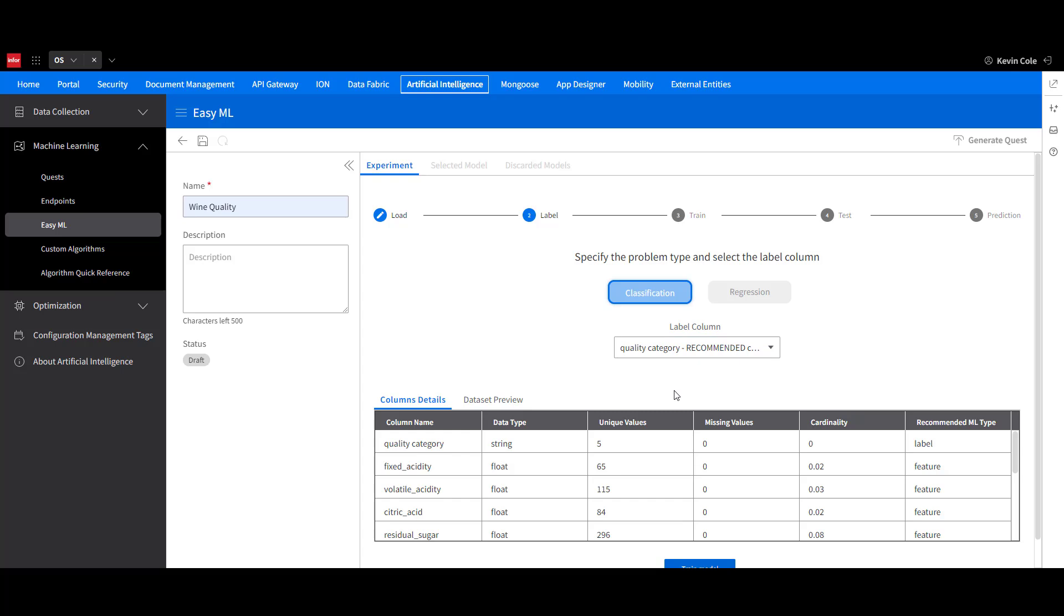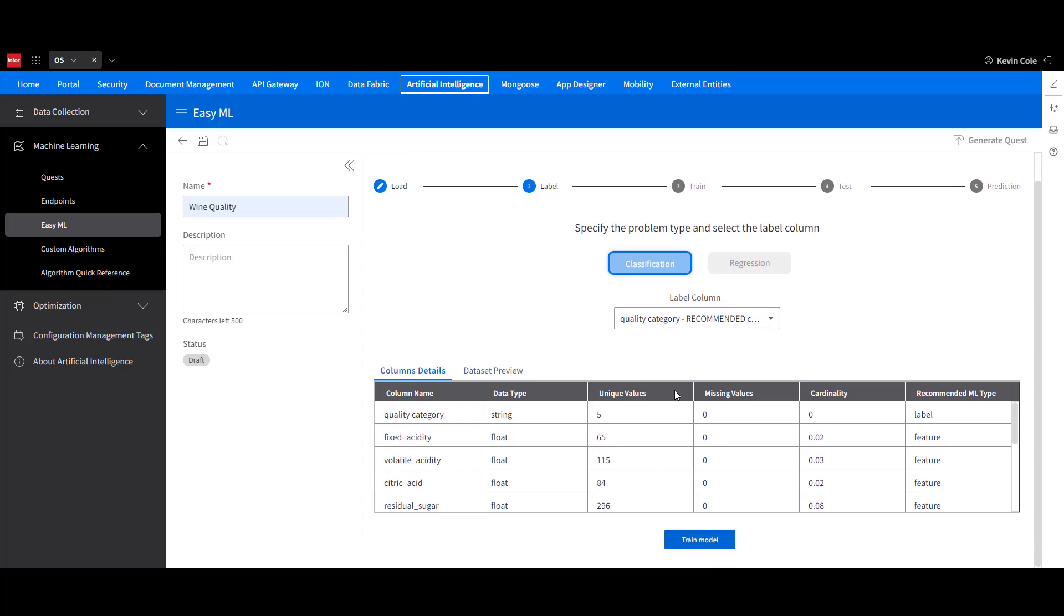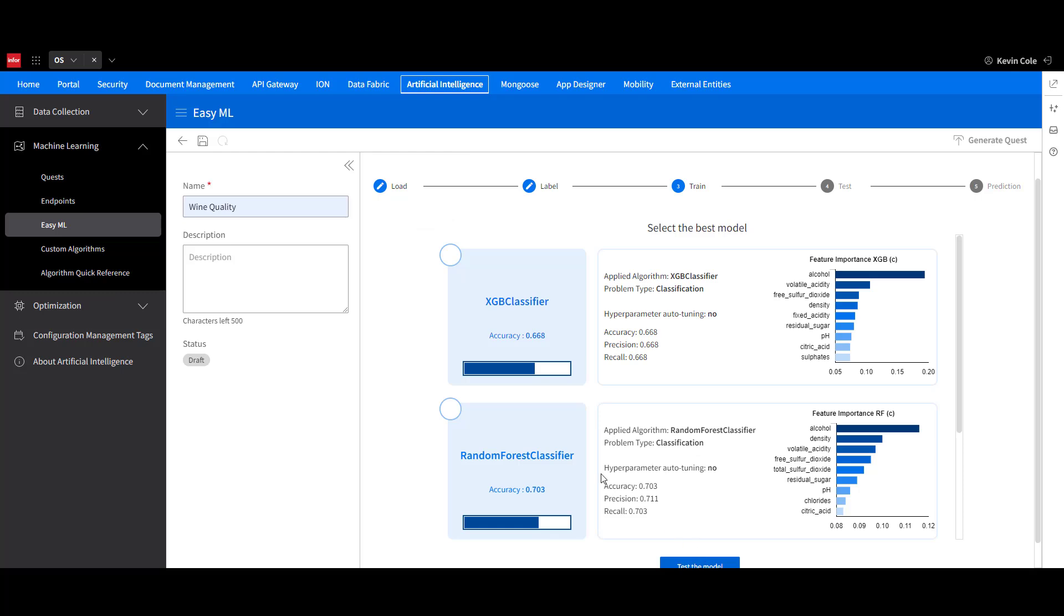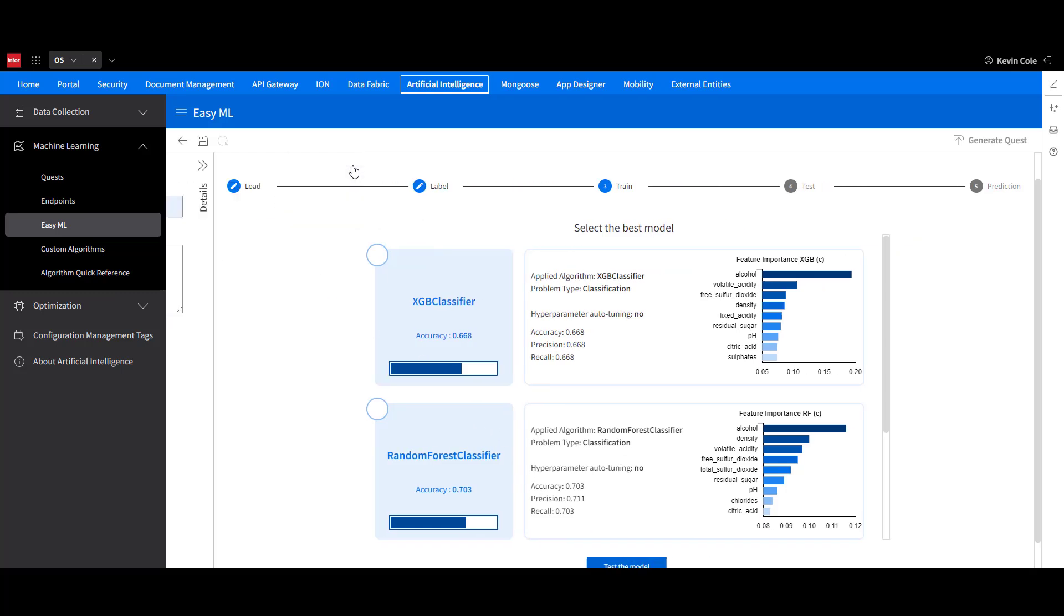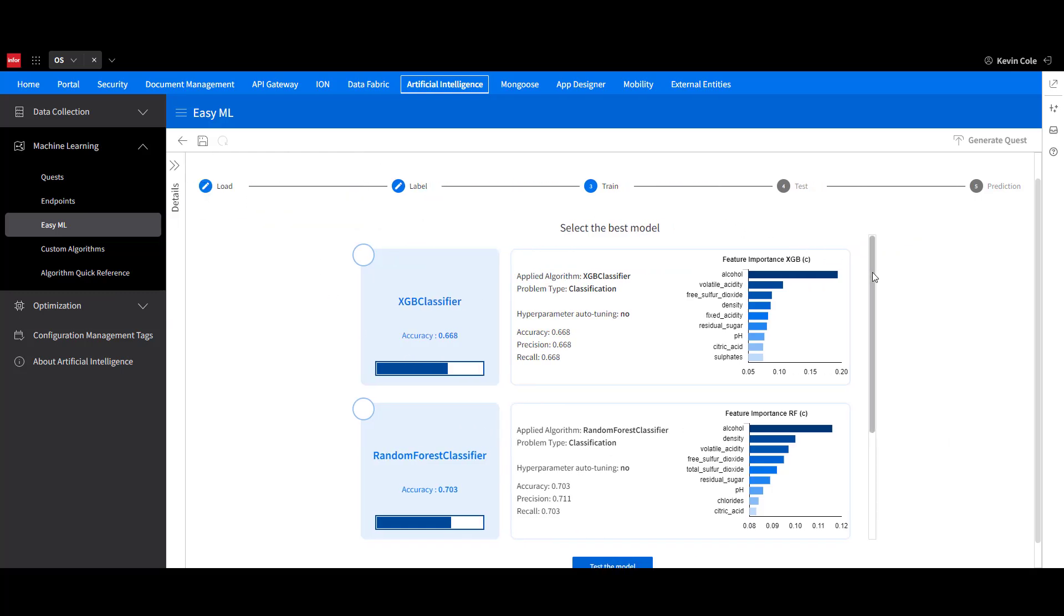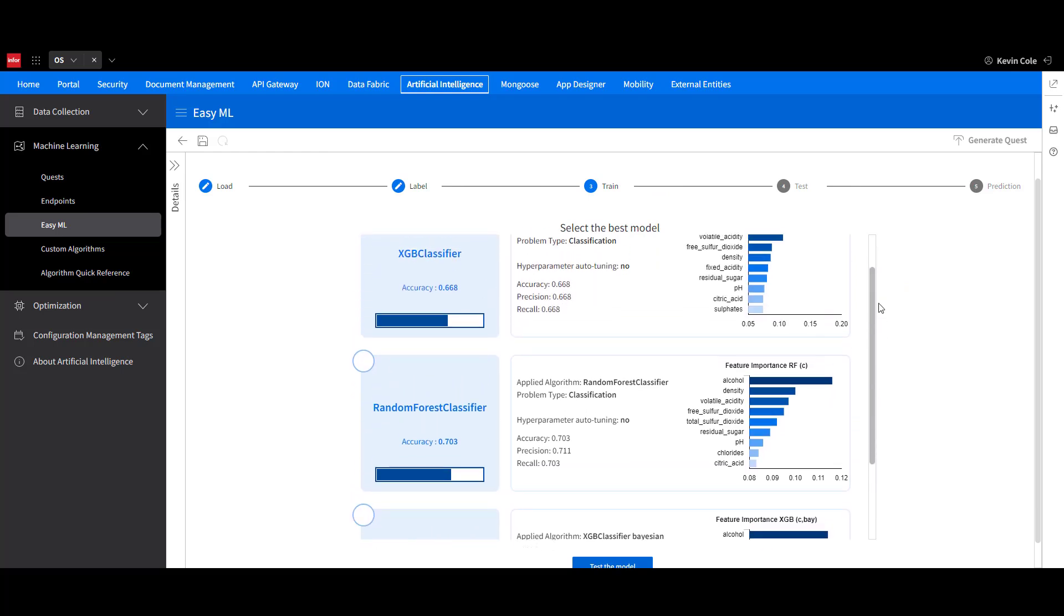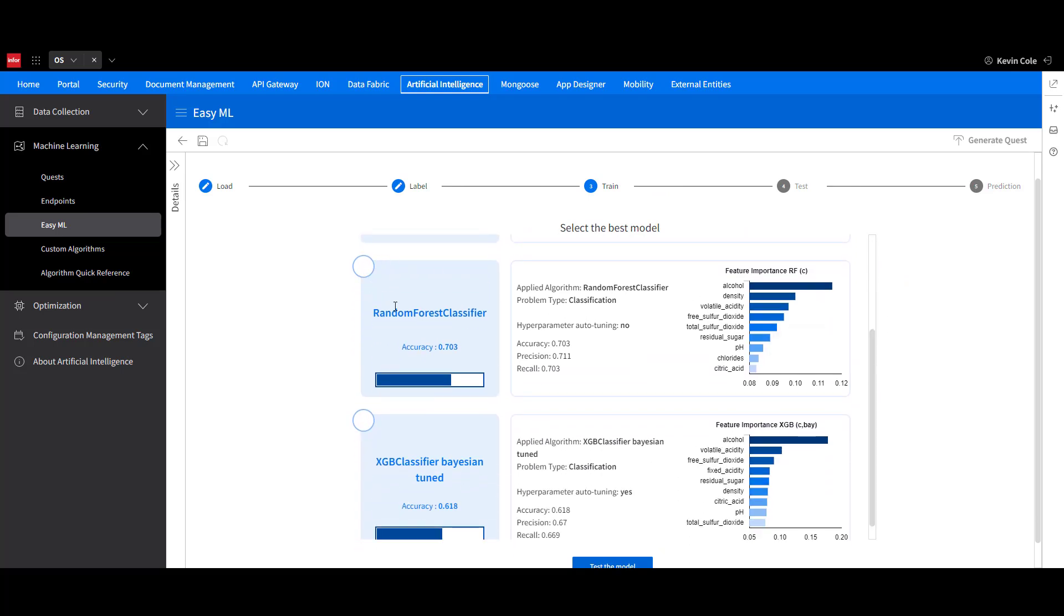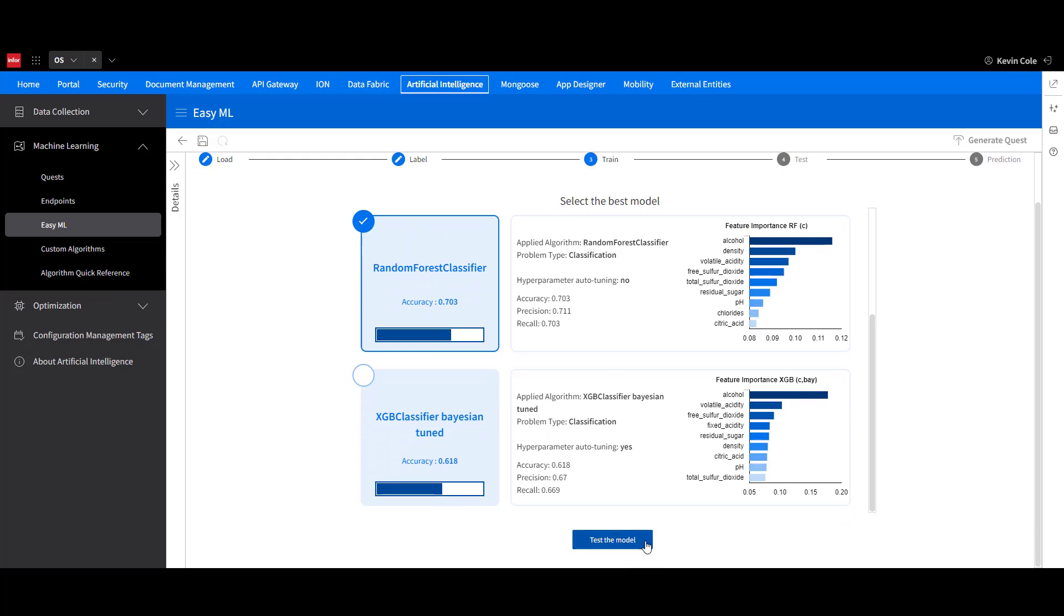Target label just means it's the variable that we are eventually going to predict. In this case, the quality of our wine. Once we've done that, we can train the model. EasyML will run a few different models for you. It will try different algorithms and hyperparameters. We can view the performance statistics and the feature importance for each model, and then select one that we would like to move forward with.